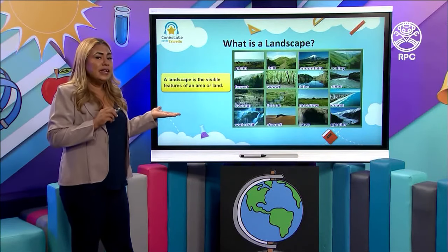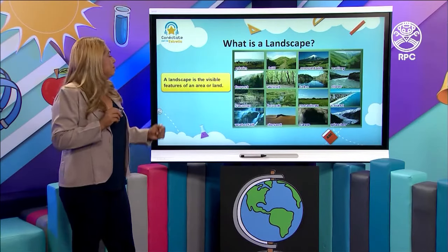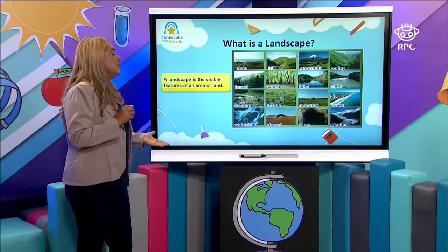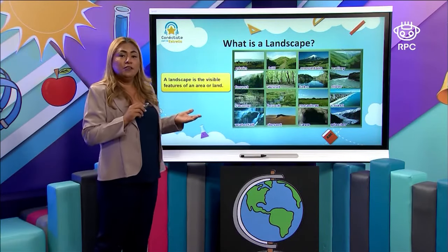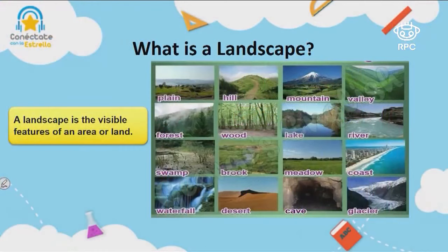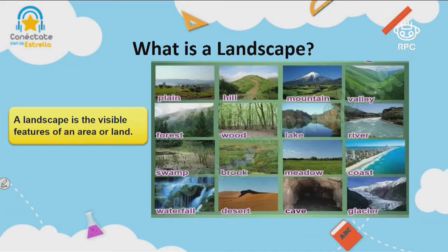What is a landscape? A landscape is the visible feature of an area — it is what you can see from a place. And we have some examples of landscape like plain, hill, mountain, valley, forest, wood, lake, and river.